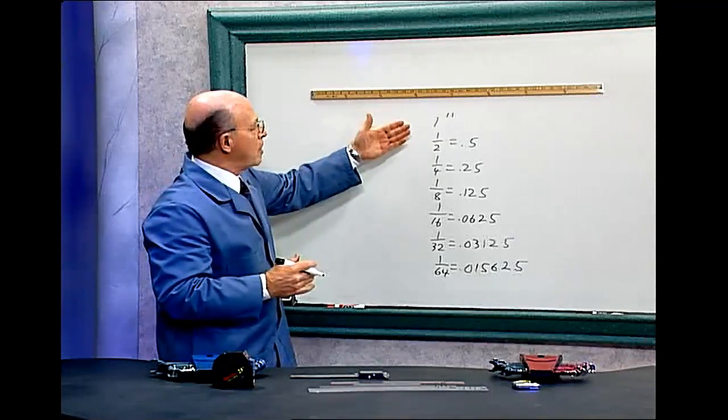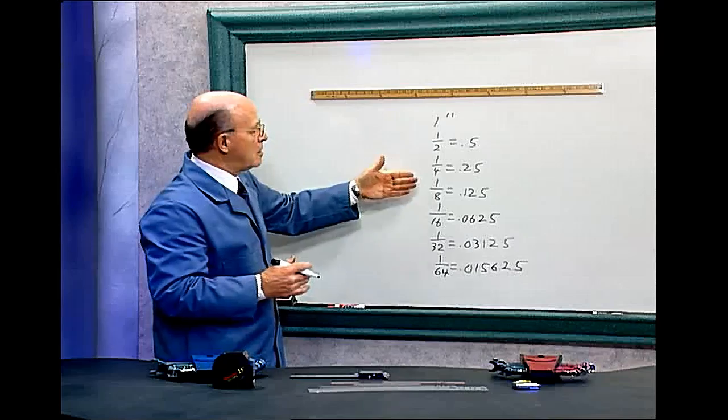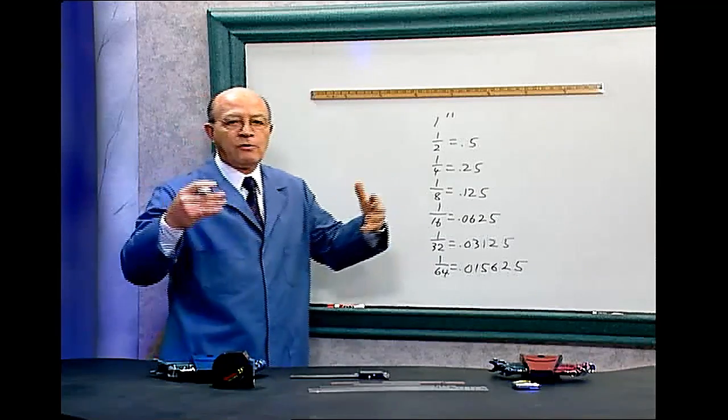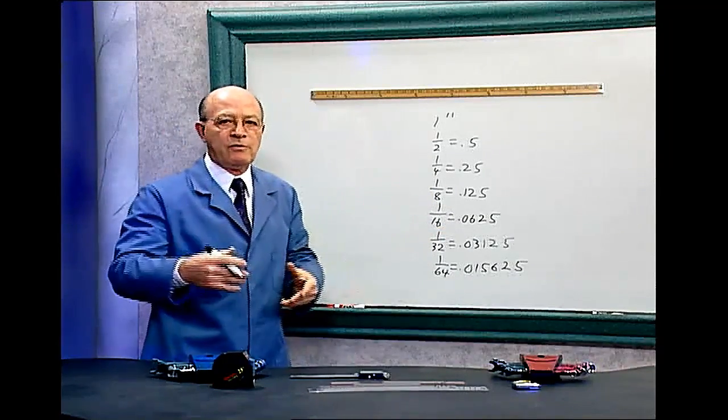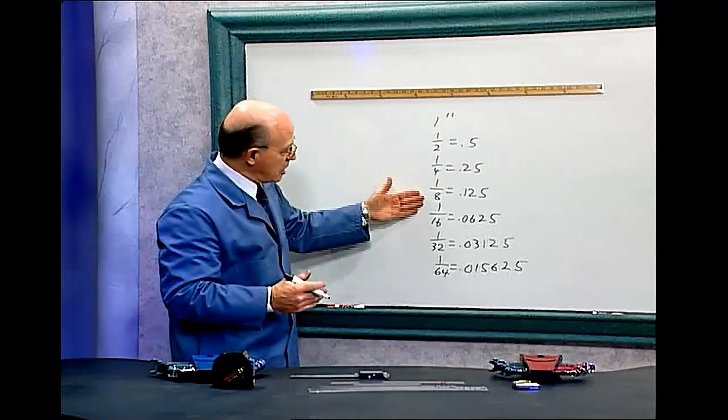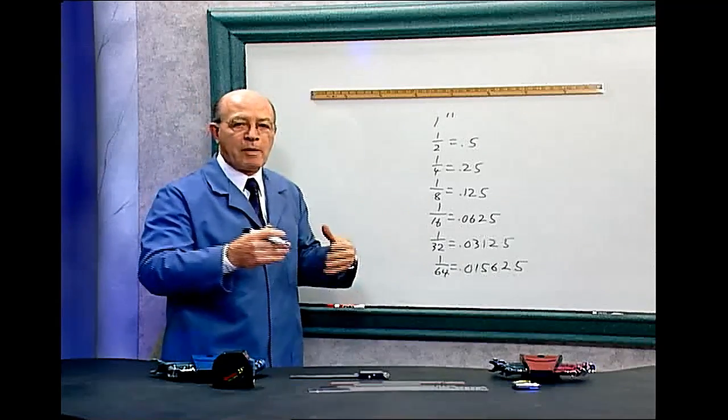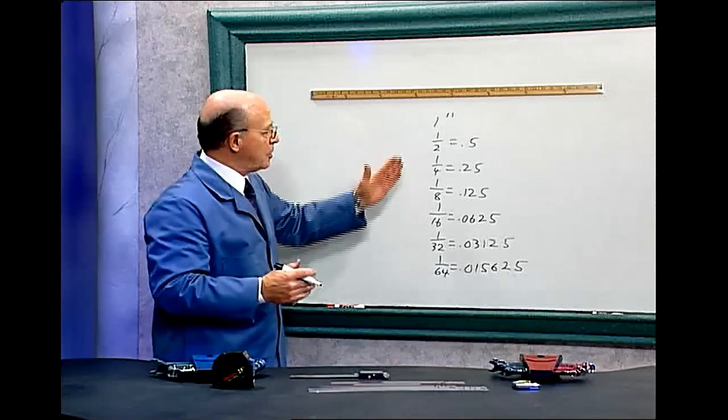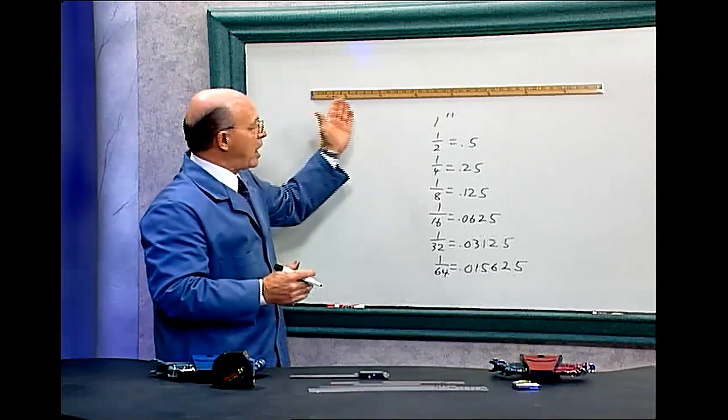Now, it's easy to know one inch, a half, one-quarter, one-eighth, those numbers, like three-fourths equals point seven-five, seven-eighths is point eight-seven-five. But when you get to these other numbers, it's kind of difficult to remember all the numbers. And that's one of the big problems with a fractional ruler.